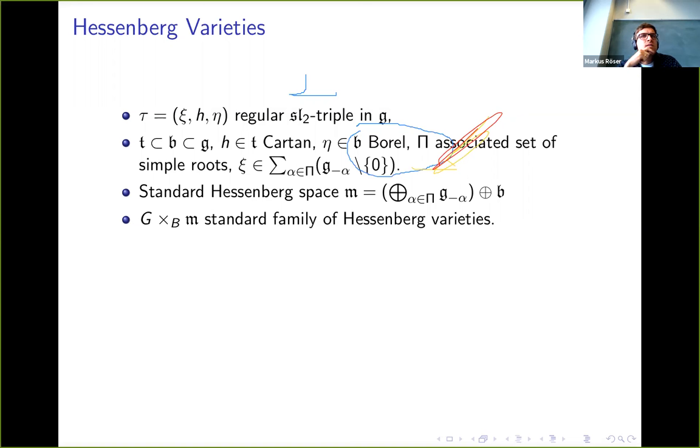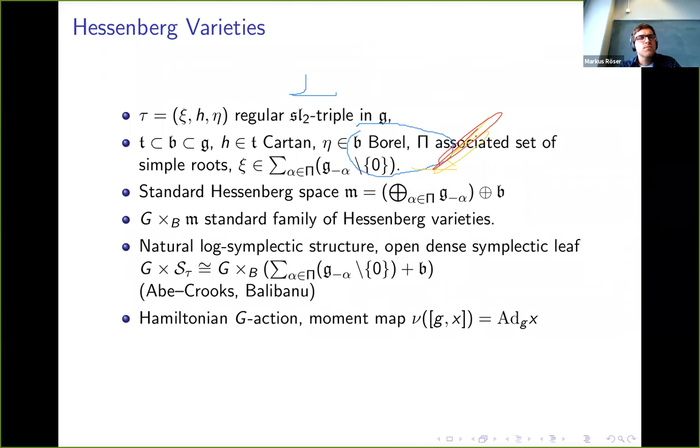From this data we can form the standard Hessenberg space. This is just the direct sum of the negative simple root spaces plus the Borel. So this is a B invariant subspace of the algebra and we can form this associated vector bundle which is called the standard family of Hessenberg varieties. Peter and Abe and also Balibanu have observed that this comes actually with a natural log-symplectic structure and its open dense symplectic leaf is again G×Sτ. We have a Hamiltonian G action here and the moment map is just the one you would expect basically. The fibers of this moment map, that's what people call Hessenberg varieties. Each fiber comes with a natural action of the centralizer of X. That's the information about Hessenberg varieties that we need.